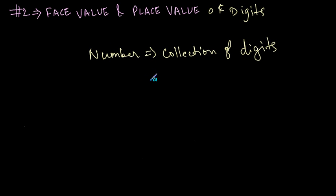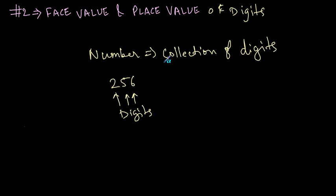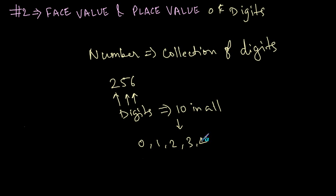We all know that a number is a collection of digits and it has got some value. For example, if I have the number 256, these are the digits. In the decimal number system, there are 10 digits in all: 0, 1, 2, 3, 4, 5, 6, 7, 8, and 9. You combine these digits to form a number of specific value.